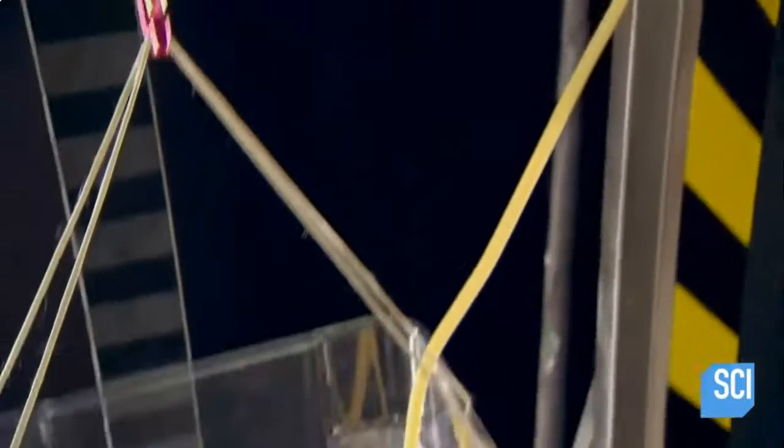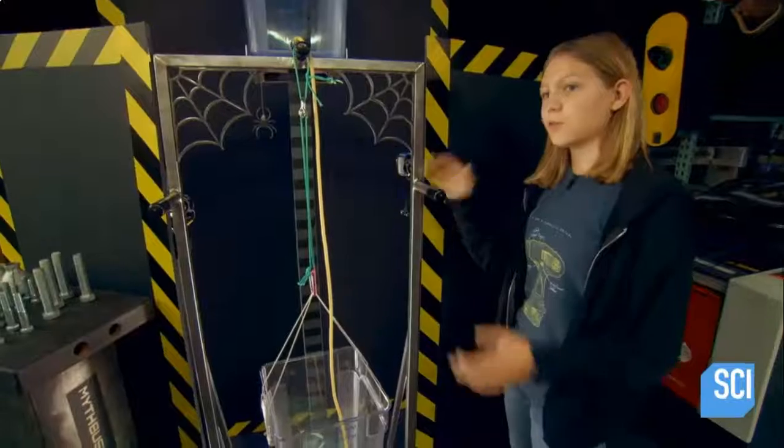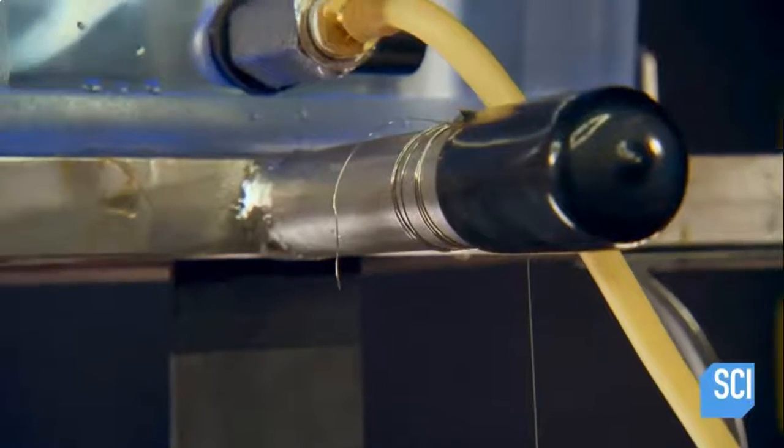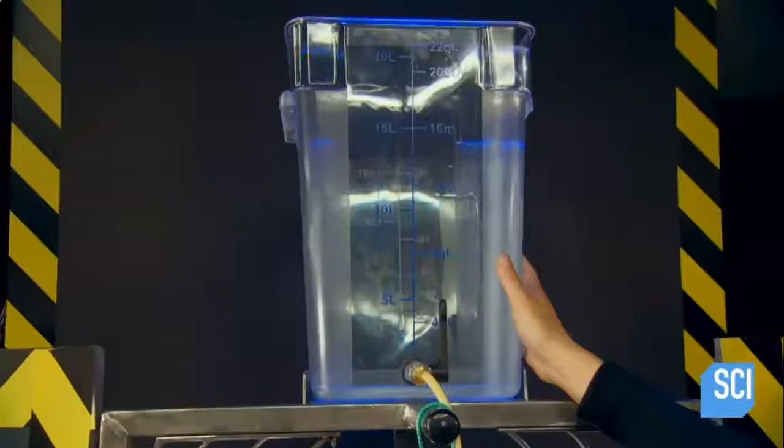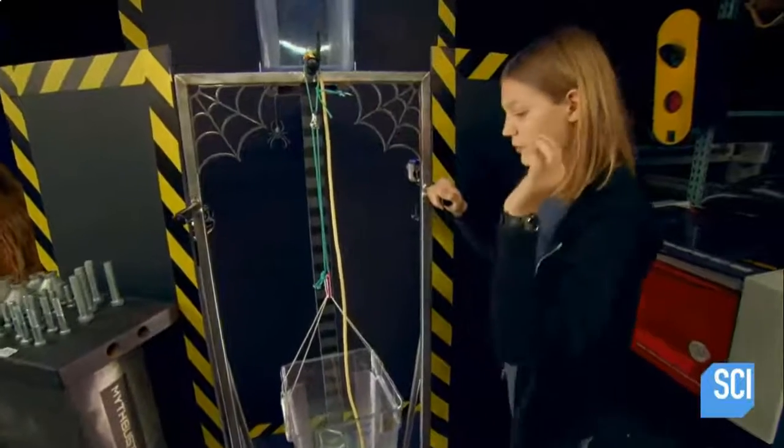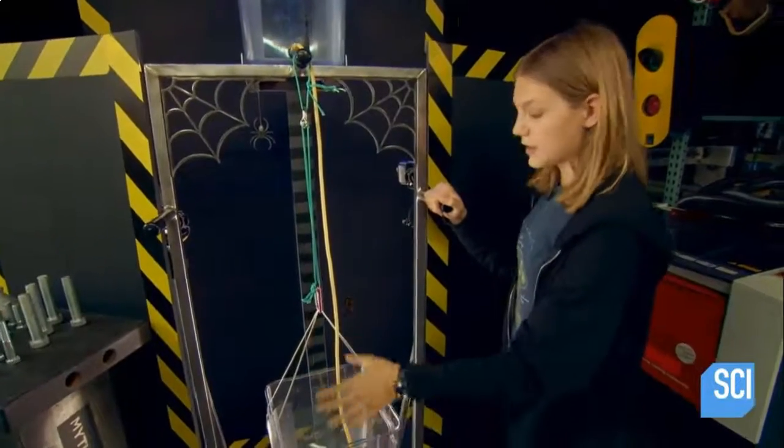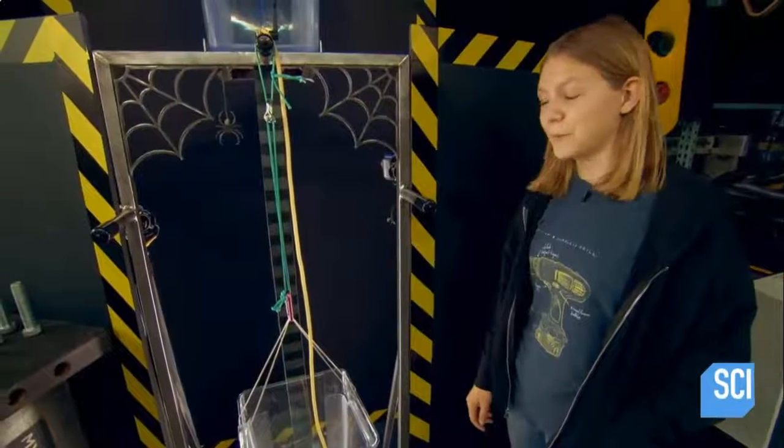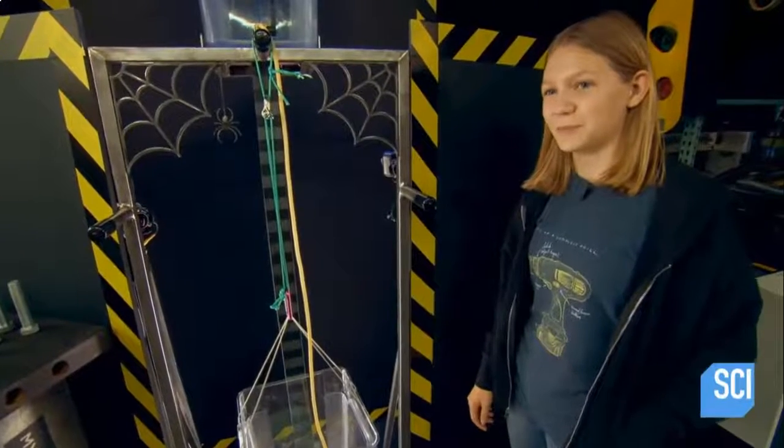For this final silk versus steel smackdown, the team has adapted the test rig with a clever addition. We'll be conducting two different experiments—first with our steel twine, with water being released in a controlled manner to the bottom tank. It will weigh down that cable until hopefully it'll sever, and we'll be able to see how much weight in water is causing that thing to snap. I'm pretty sure that spider silk is going to kick steel's butt.